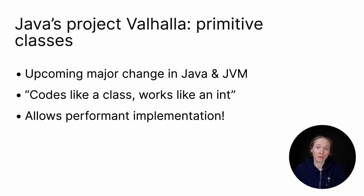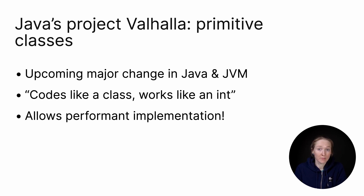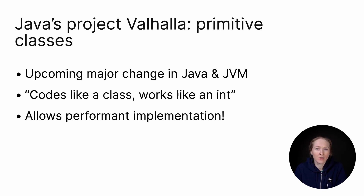You've probably already guessed that it's connected with a big upcoming change in both Java and JVM – Project Valhalla. Its motto is similar to what we've discussed about inline classes: codes like a class, works like an int. The goal is to combine the benefits of built-in primitive type's performance and the regular class's type safety, and that comes with native JVM support. I'll use the Kotlin terminology – say value classes – but assume they are implemented as JVM primitive classes under the hood.